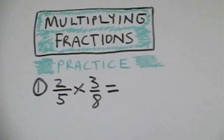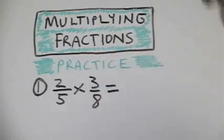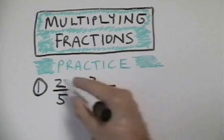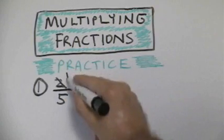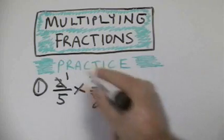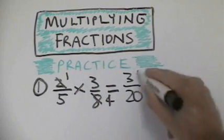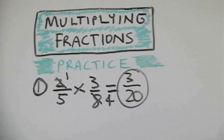Now it's time to practice what you learned. Multiply two-fifths times three-eighths. If you got three-twentieths as your answer, you are correct.